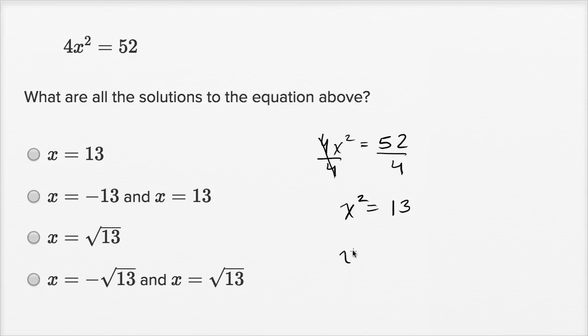So x could be equal to, if x² = 13, that means x could be the positive or the negative square root of 13. So x is going to be equal to the positive or negative square root of 13.